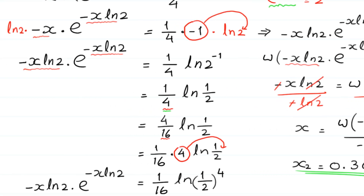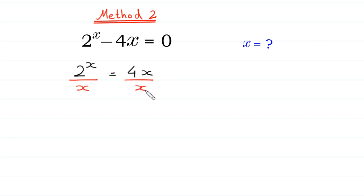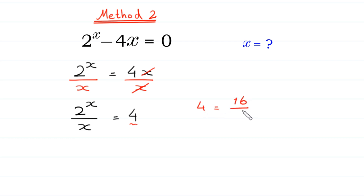Now let us solve this equation by Method 2. We move negative 4x to the right side: 2^x equals 4x. We divide both sides by x; the x cancels and we get 2^x over x equals 4. This 4 is the same as 16 divided by 4. So we replace 4 with 16 over 4: 2^x divided by x equals 16 over 4.